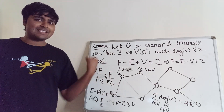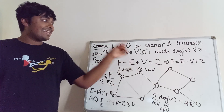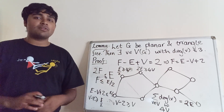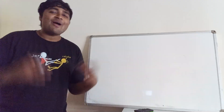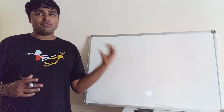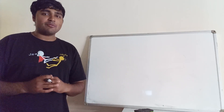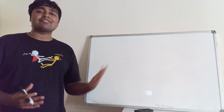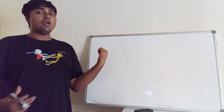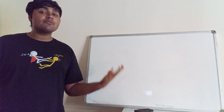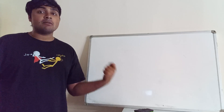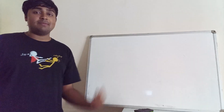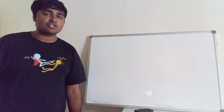I hope that made sense — that's the proof of the lemma. Now let's use this to prove the main result about the four-colour map theorem. We have a planar triangle-free graph G and want to prove there exists a proper four-colouring on G. We'll prove this by induction on the number of vertices N of G.